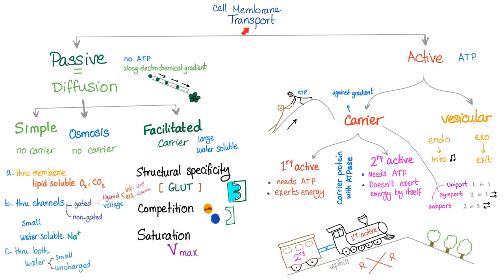Cell membrane transport is divided into passive diffusion and active transport. The passive transport or diffusion does not need any ATP, and it occurs along the electrochemical gradient. On the other hand, active transport requires ATP, and it's usually against the electrochemical gradient. If you talk about passive diffusion, it's not just one type — we have three subtypes: simple diffusion, osmosis, and facilitated diffusion.